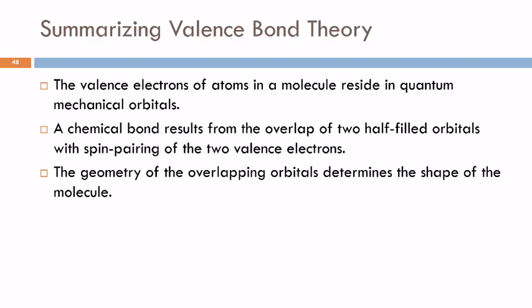So here it's the two electrons are spin paired. The geometry of the overlapping orbitals is what determines the shape of the molecule.